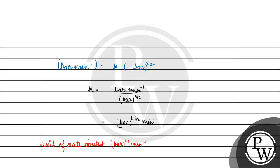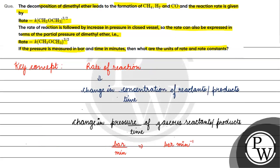So bar per minute is the unit of rate, and bar^(-1/2) minute^(-1) is the unit of rate constant K. I hope this is clear. Thank you and all the best.